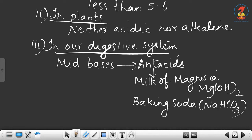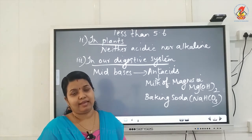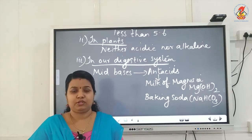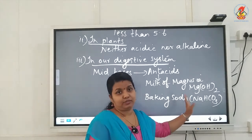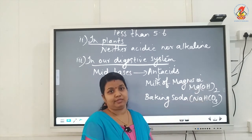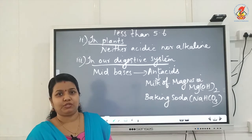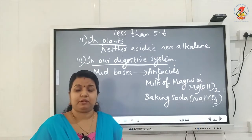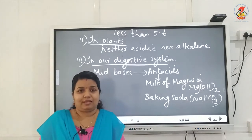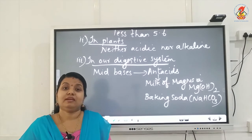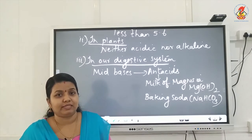So antacids are mild bases which are consumed to neutralize the excess acid produced in our stomach, and they are used for treating acidity. Excess acid produced in our stomach is neutralized by consuming mild bases called antacids. Examples of two antacids are milk of magnesia, Mg(OH)₂, and baking soda, NaHCO₃. This is the importance of pH in our digestive system.